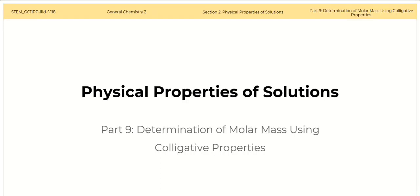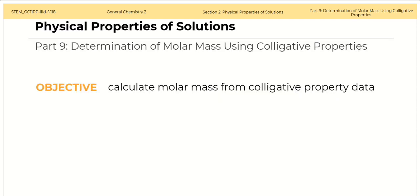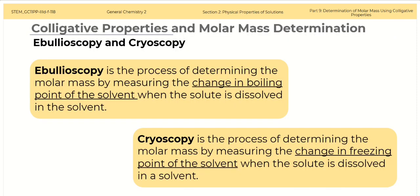Welcome to the General Chemistry 2 class. This section is on the Physical Properties of Solutions. This lesson is about determination of molar mass using colligative properties. In this lesson, we will calculate molar mass from colligative property data. Calculating colligative properties of a solution can be applied to determine the molar mass of unknown compounds, and we will discuss some of the methods for molar mass determination.